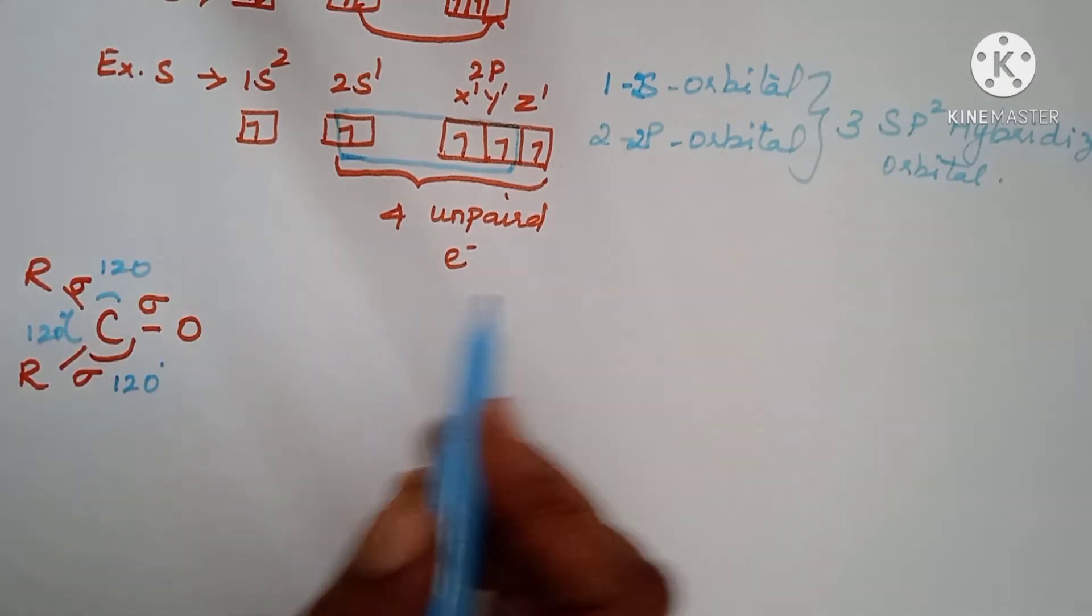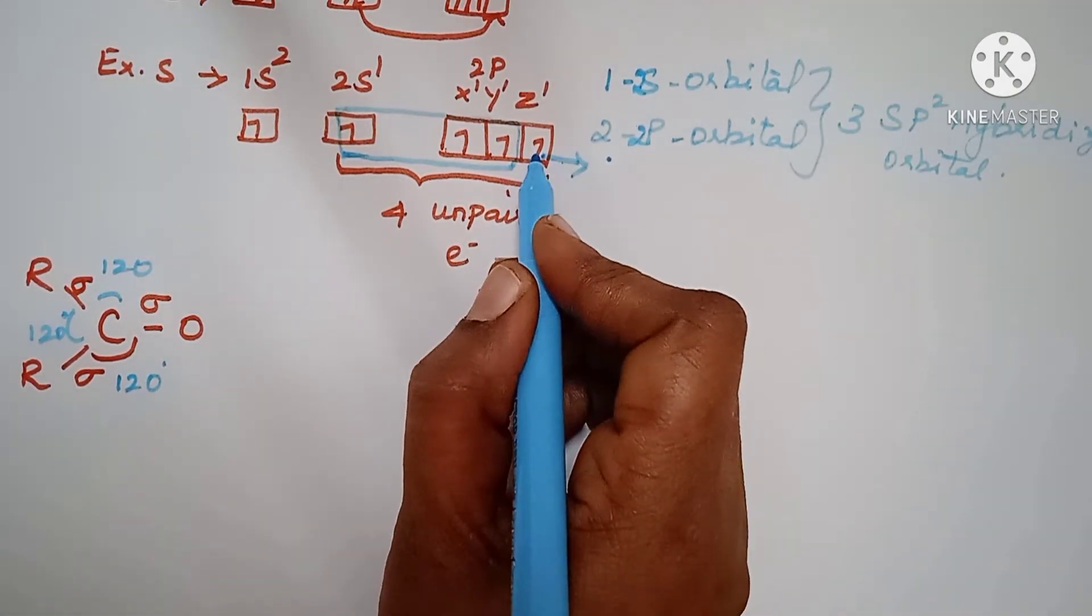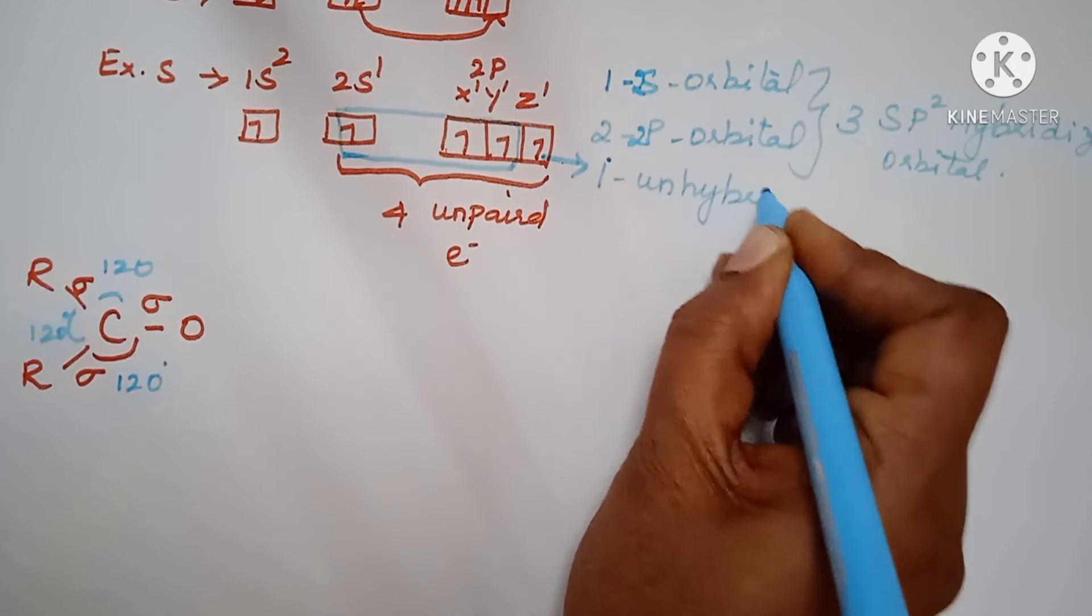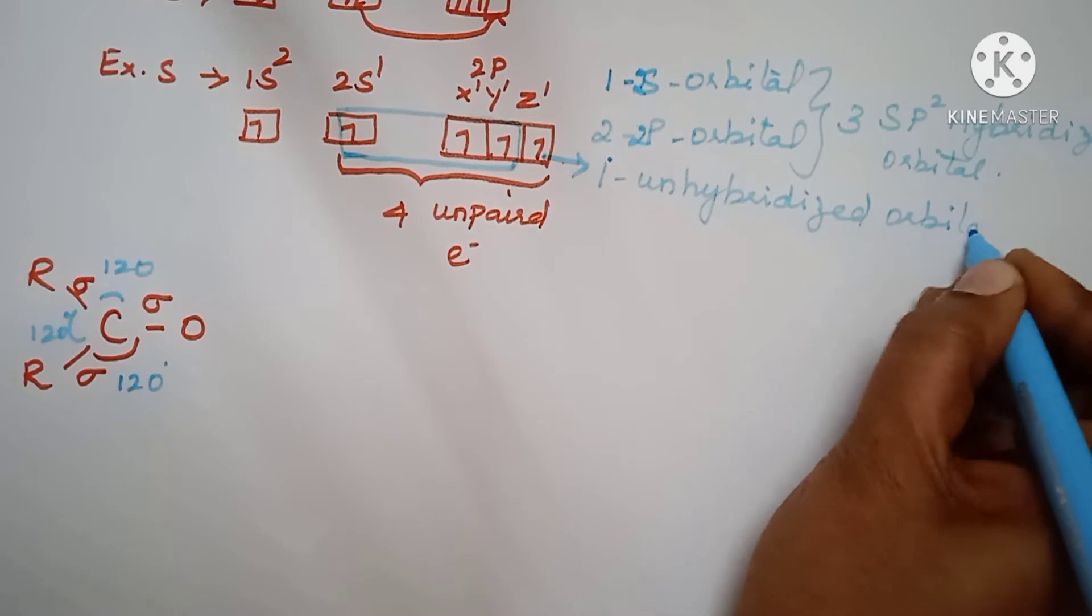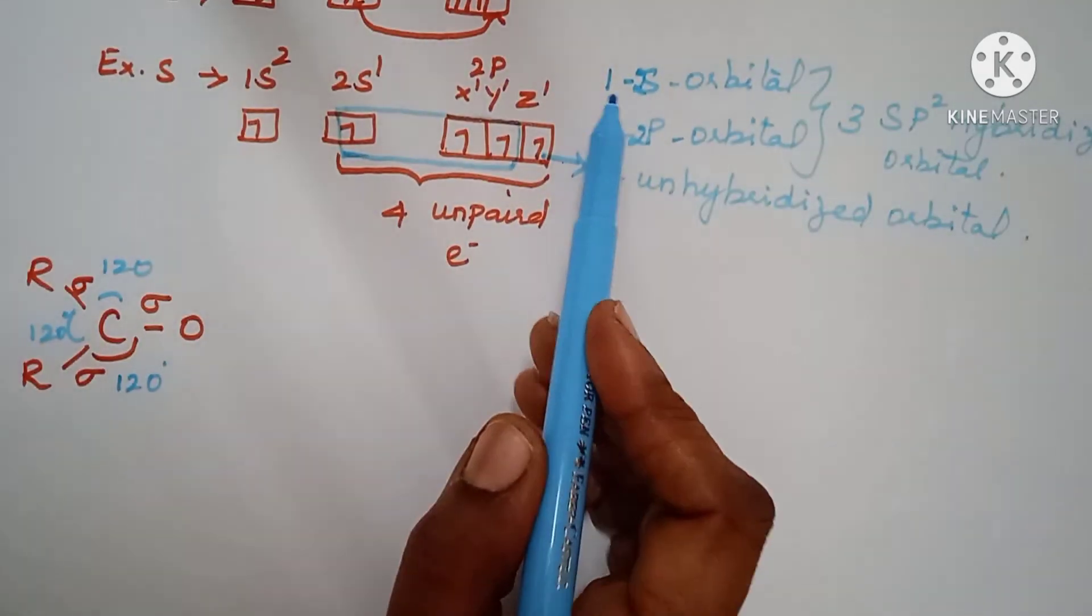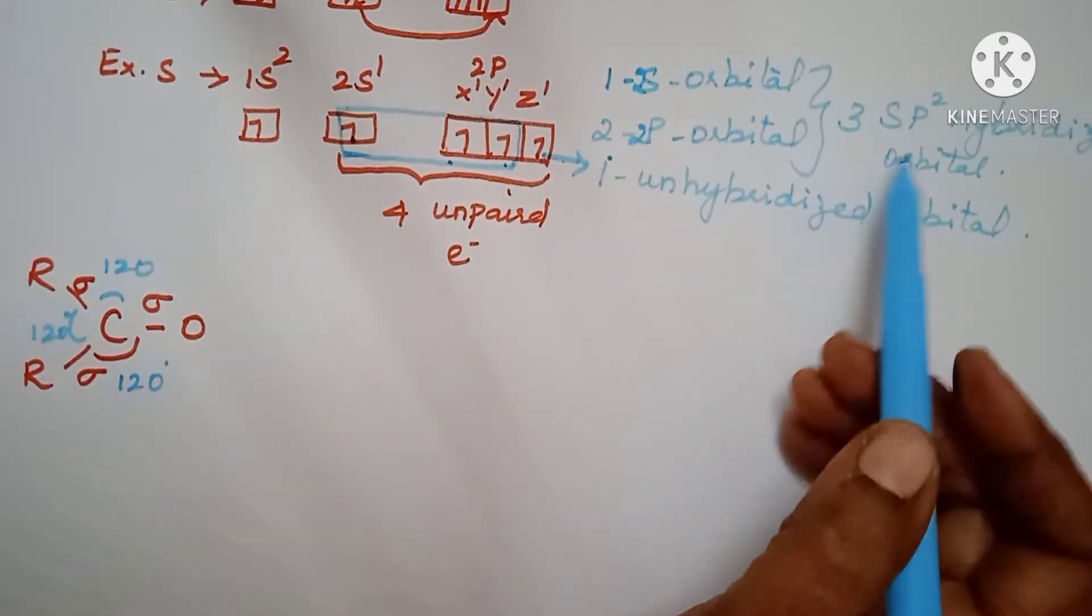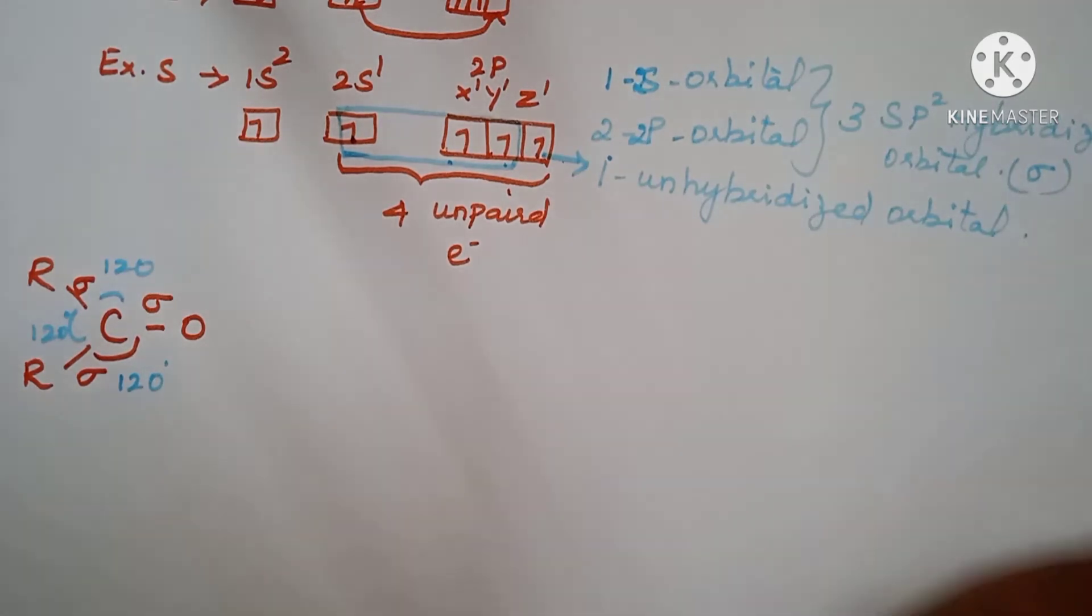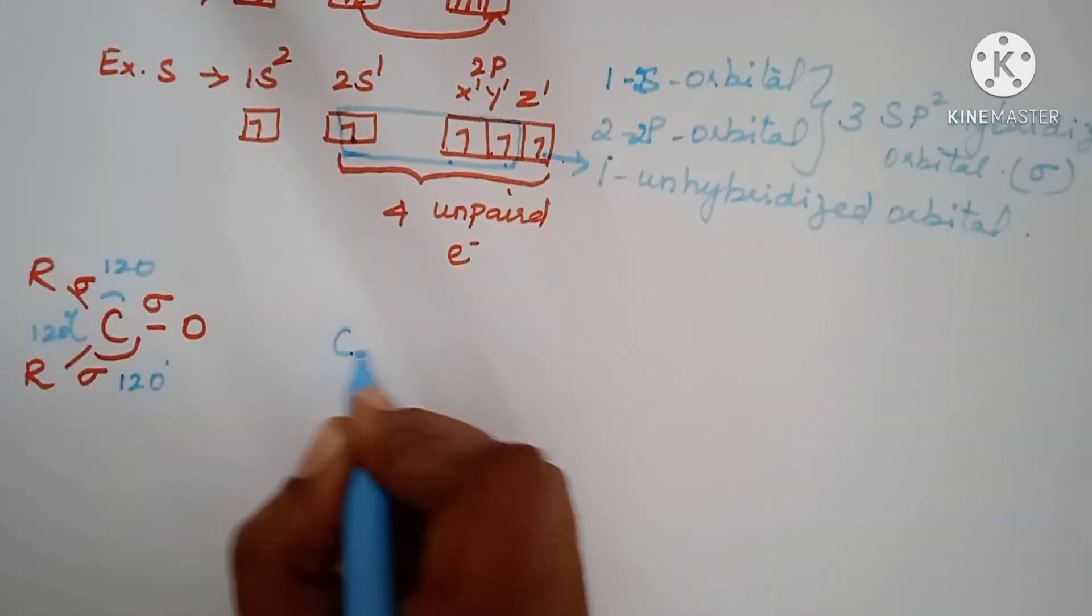Now, this unhybridized p orbital, where is it? Here, one unhybridized. See, I will tell you, one 2s orbital and two 2p orbitals combine to form 3 sp2 orbitals, that is sigma bonds. So how many sigma bonds will be there? Three sigma bonds are there. Now, unhybridized p orbital, what will happen?